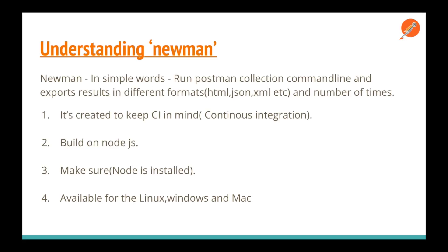Newman is basically made with CI — continuous integration — in mind. For example, if you change something in a build system and you want to run your collection more than once a day with a continuous integration system, that's what it's designed for. It is built on Node.js, so you must have Node.js installed on your system. It is available for Linux, Windows, and Mac.